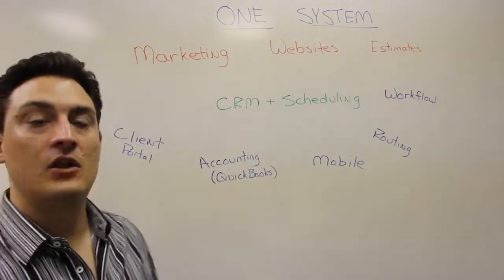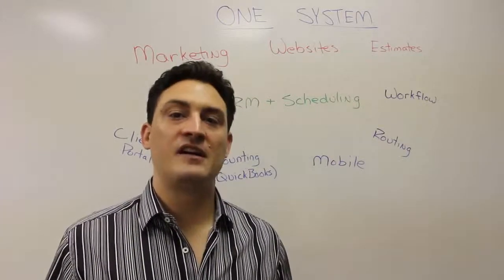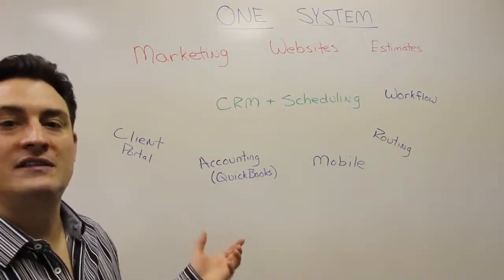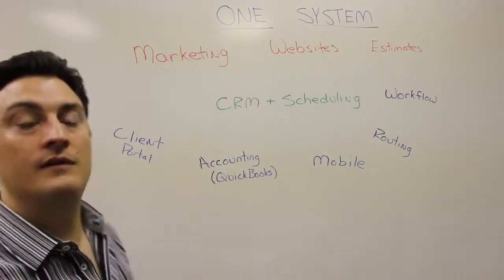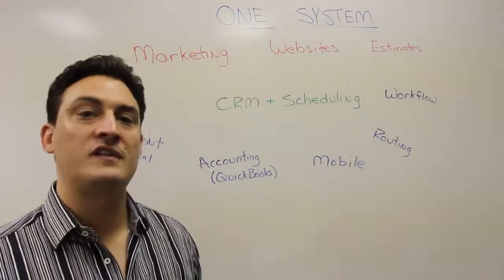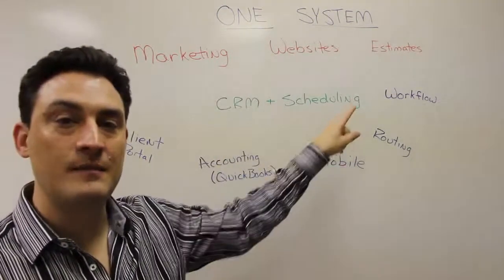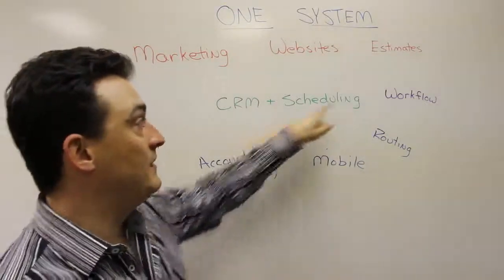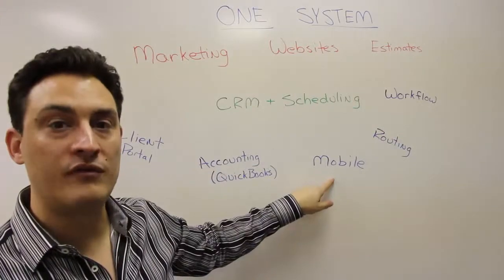Now, once you send a client an invoice or once a client is thinking to themself, I wonder how much money I owe. They can go to the client portal and they can see all kinds of things about their business or if they're a homeowner, they can see what their account balance is. They can print invoices. They can make requests all connected back into the main system. A request that they make flows to the CRM that could flow to scheduling or maybe flow to an estimate and eventually out to a mobile to have the work performed.